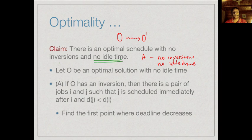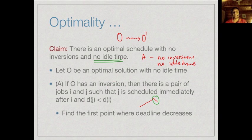The first claim is that if O has an inversion, then it has an inversion among two consecutive elements — a pair of jobs i and j such that j is immediately after i but d(j) < d(i). This is clear because if deadlines normally keep increasing and there is an inversion somewhere, at the point where they come down there must be two adjacent items where the bigger one comes before the smaller one.